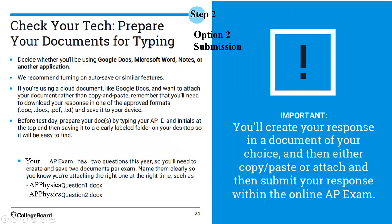They suggest you prepare your documents for typing beforehand. If you're doing the copy-and-paste or save-and-attach method, have those ready with your ID and initials at the top, saved in a clearly labeled folder you know how to find. Your AP exam has two questions, so maybe title them something like 'AP Physics Question 1.doc' so when you attach it, the graders know which one to grade. Prepare those beforehand so you're ready to go.